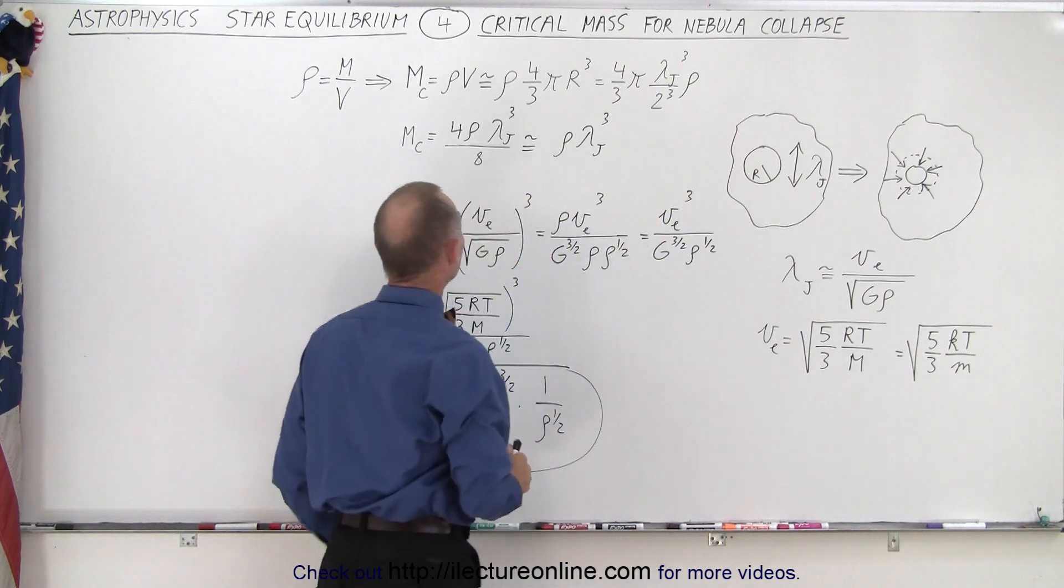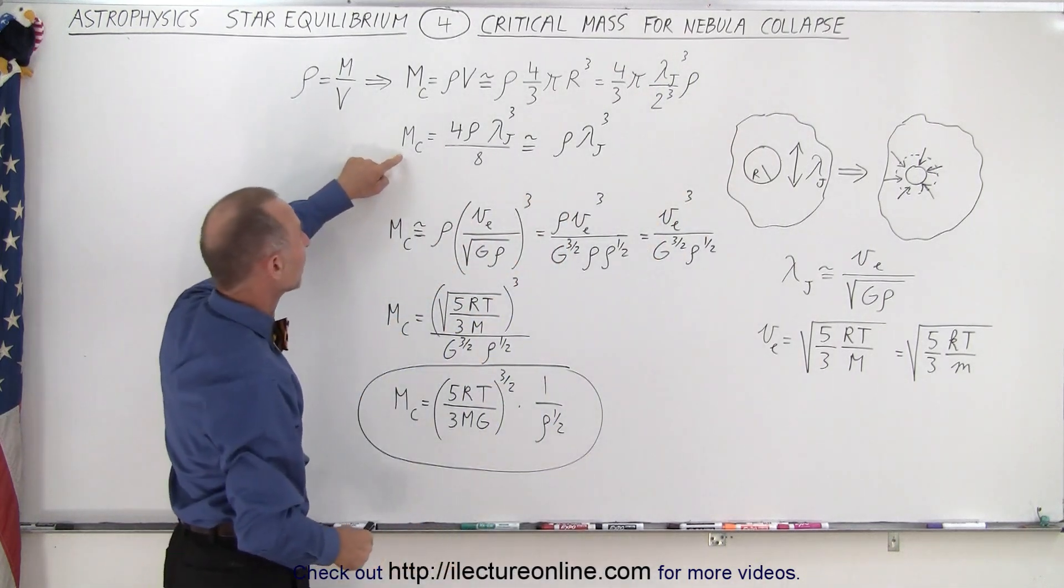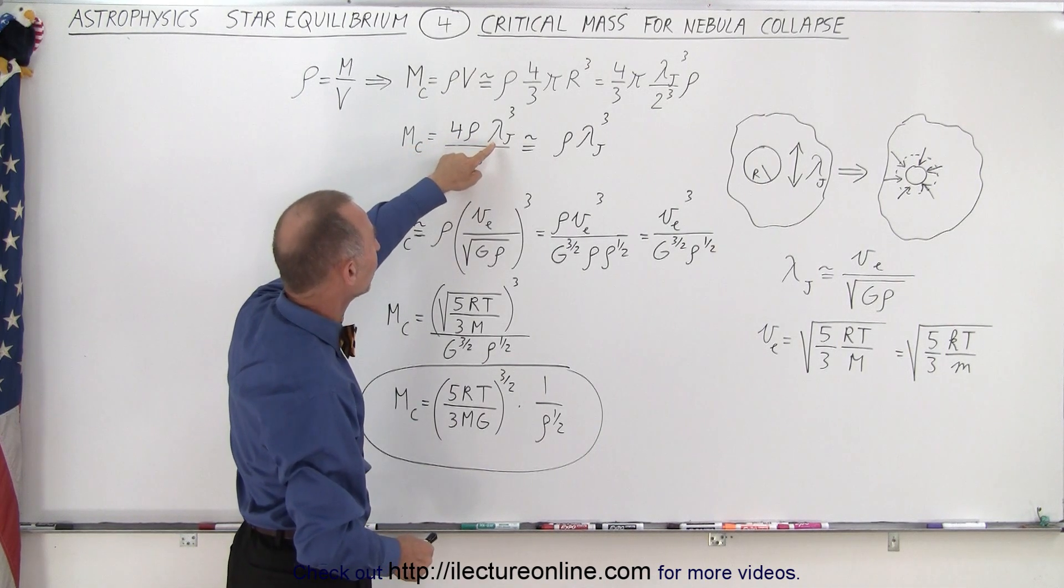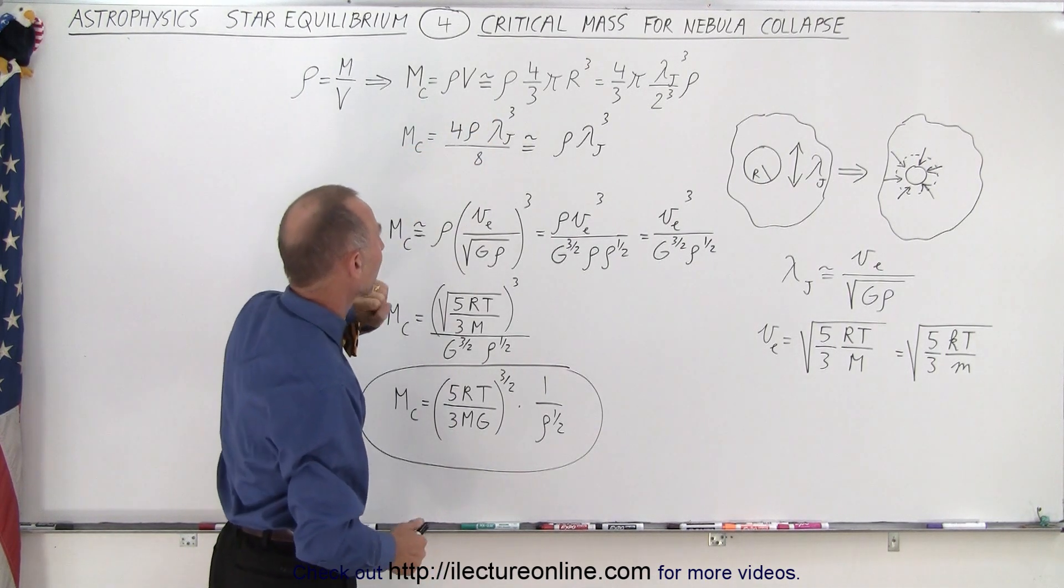We cube that, and then we get the following. We get the critical mass equal to 4 times the density times the Jeans length cubed divided by 8.